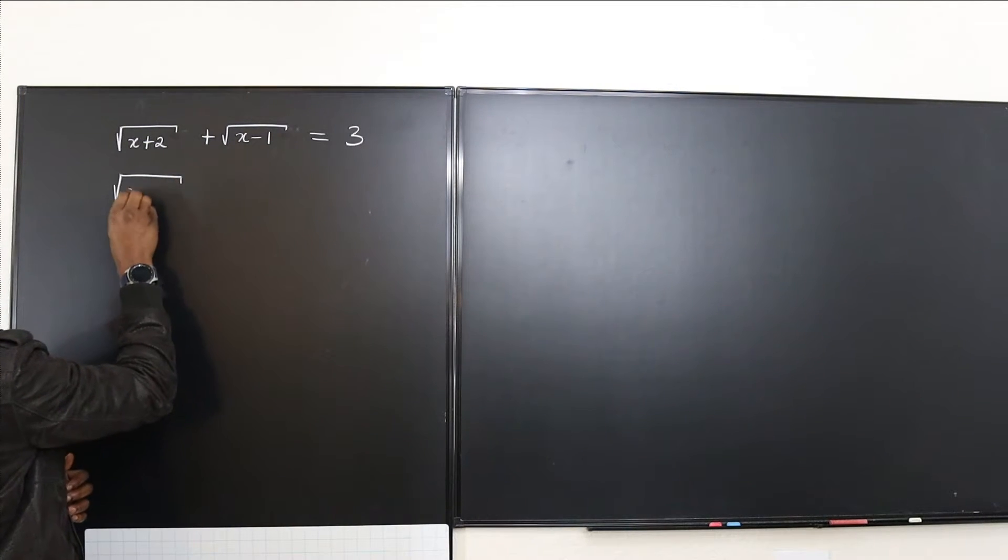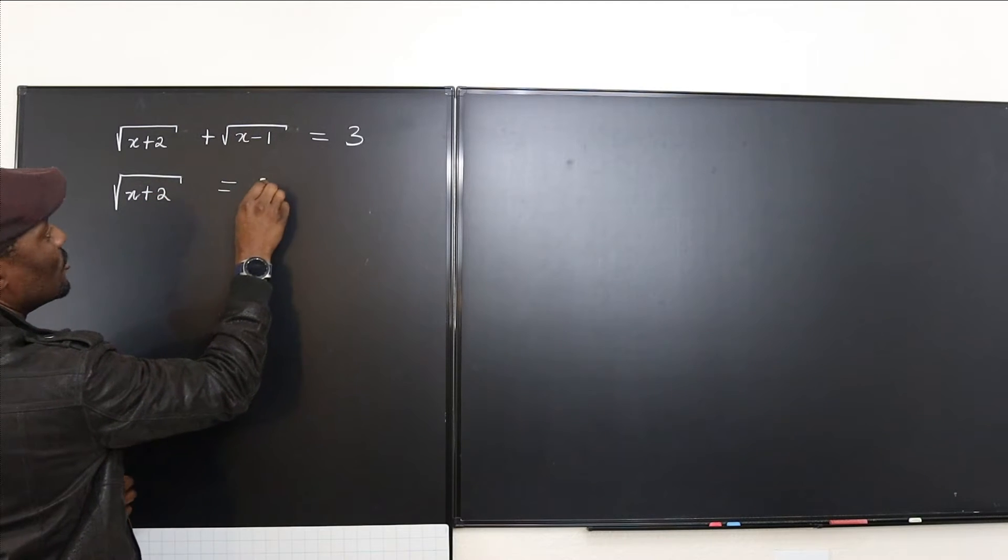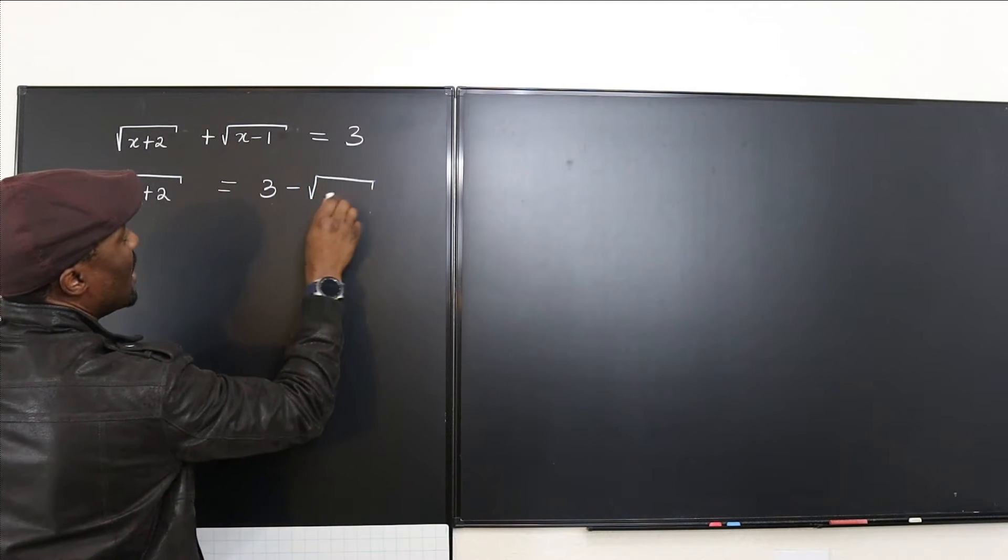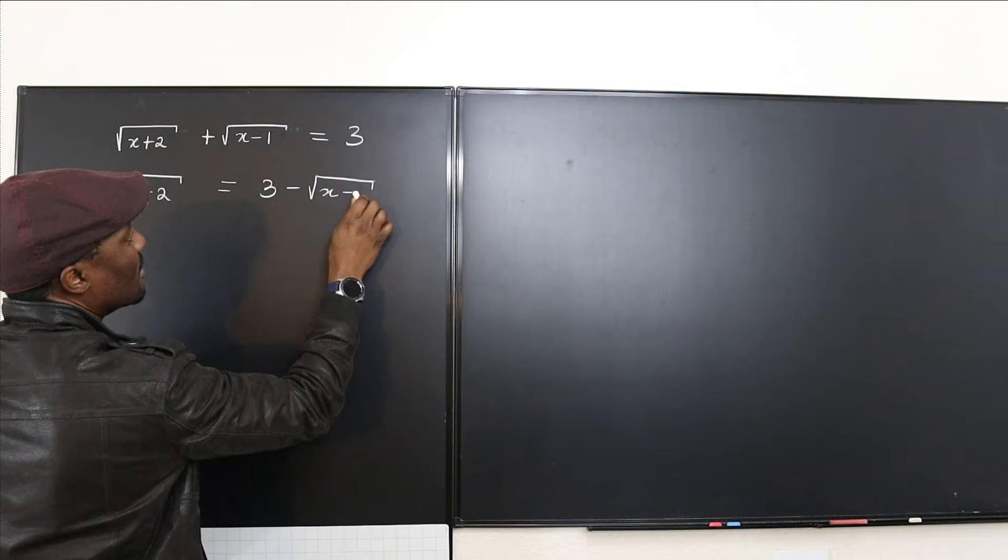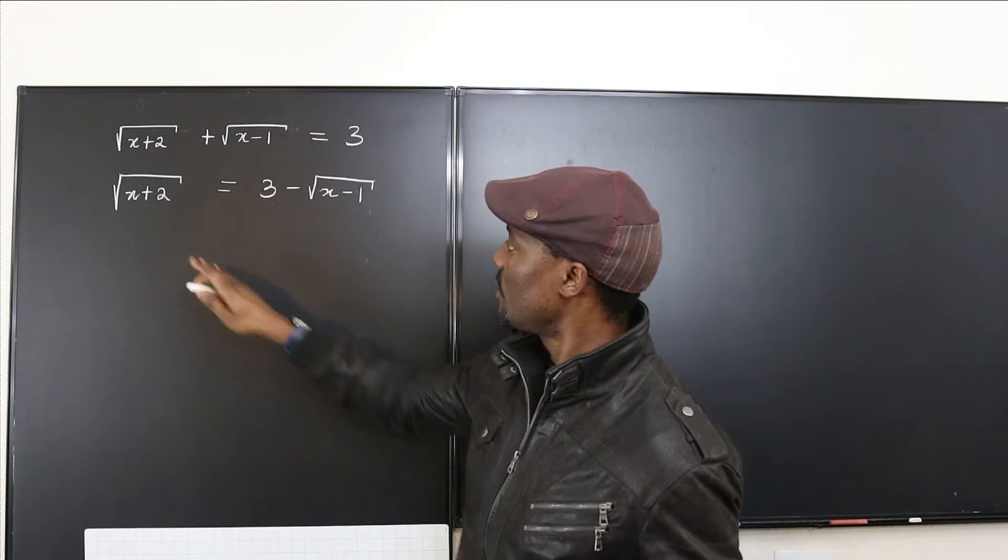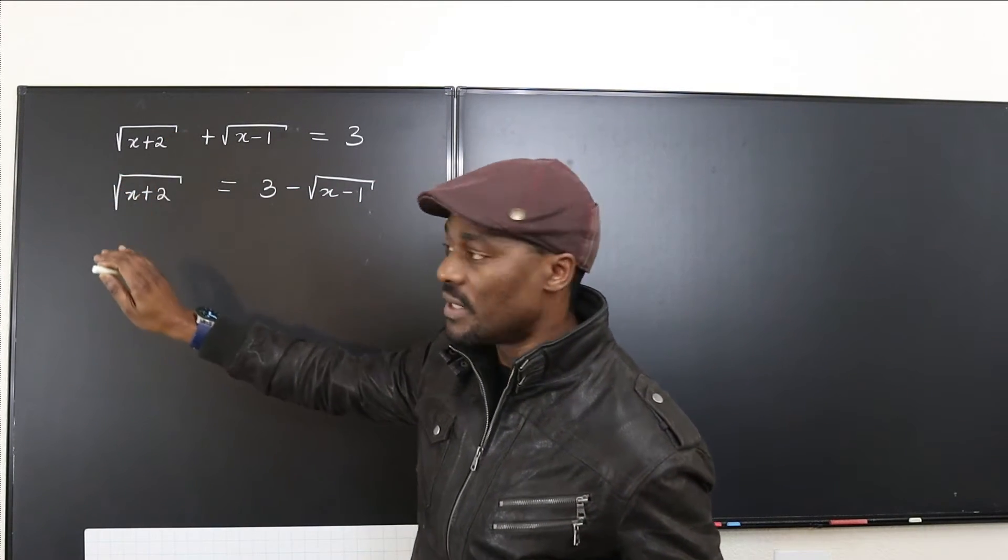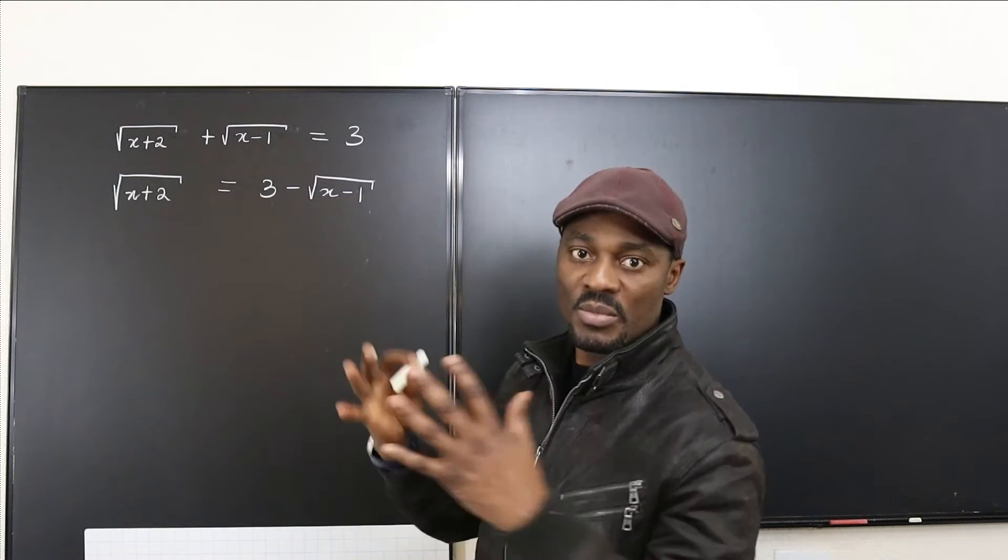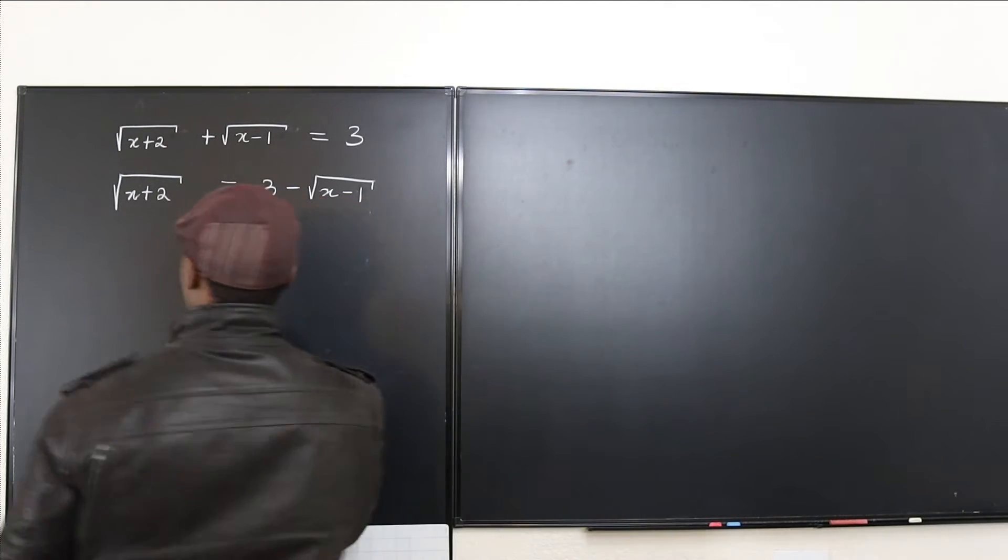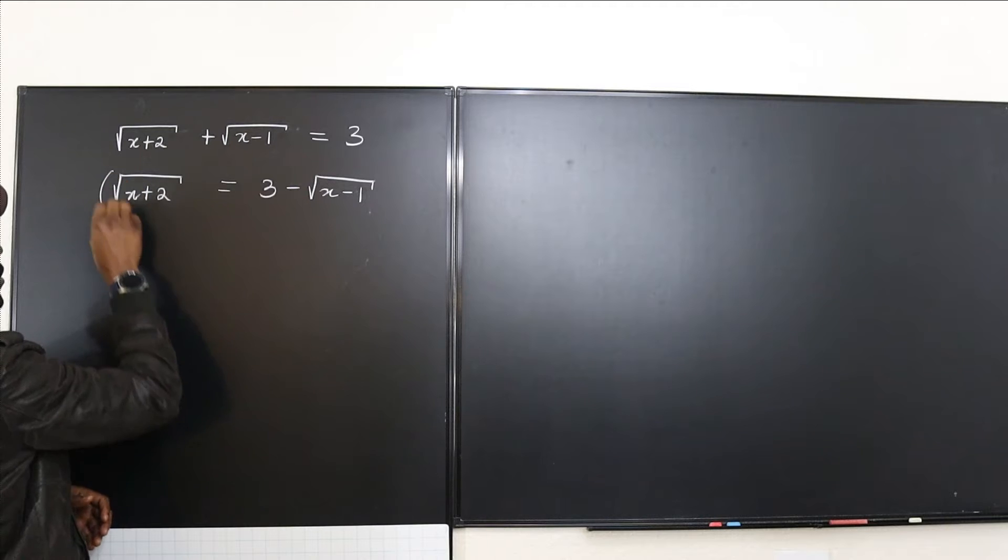So we have the square root of x plus 2, and then it will be 3 minus radical x minus 1. Okay, so with this, we can now square both sides. If we square this, the square root sign is going to disappear. And if we square this, it's going to be a binomial expansion.